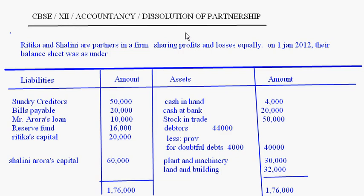Today let's take up a question on dissolution of partnership. Ritika and Shalini are partners in a firm sharing profits and losses equally. On 1st January 2012, their balance sheet was given. The liability side includes sundry creditors, bills payable, Mr. Aroda's loan, reserve fund, Ritika's capital, and Shalini Aroda's capital. On the asset side: cash in hand, cash at bank, stock, debtors less provision for doubtful debts, plant and machinery, and land and building.